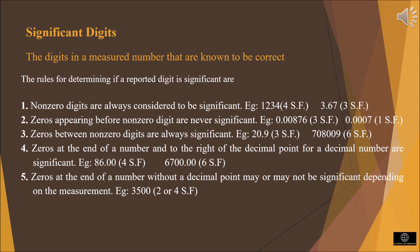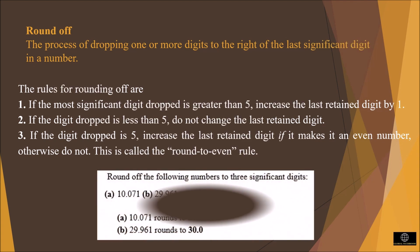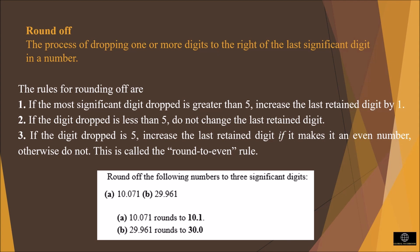Round off: the process of dropping one or more digits to the right of the last significant digit is called round off. Rules: if the digit dropped is greater than 5, increase the last retained digit by 1; if the digit dropped is less than 5, there is no change; if the digit dropped is exactly 5, increase the last retained digit if it is even — otherwise do not change (this is called the round-even rule). For example, 10.071 rounds off to 10.1 since 7 is greater than 5. In the second example, 29.961 rounds off to 30.0.